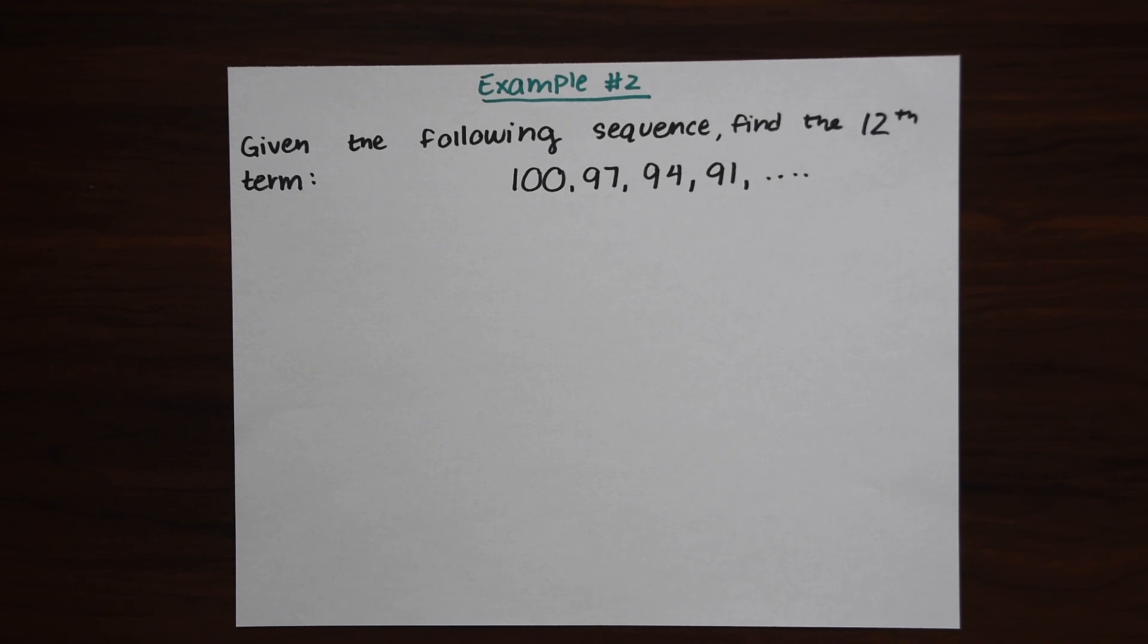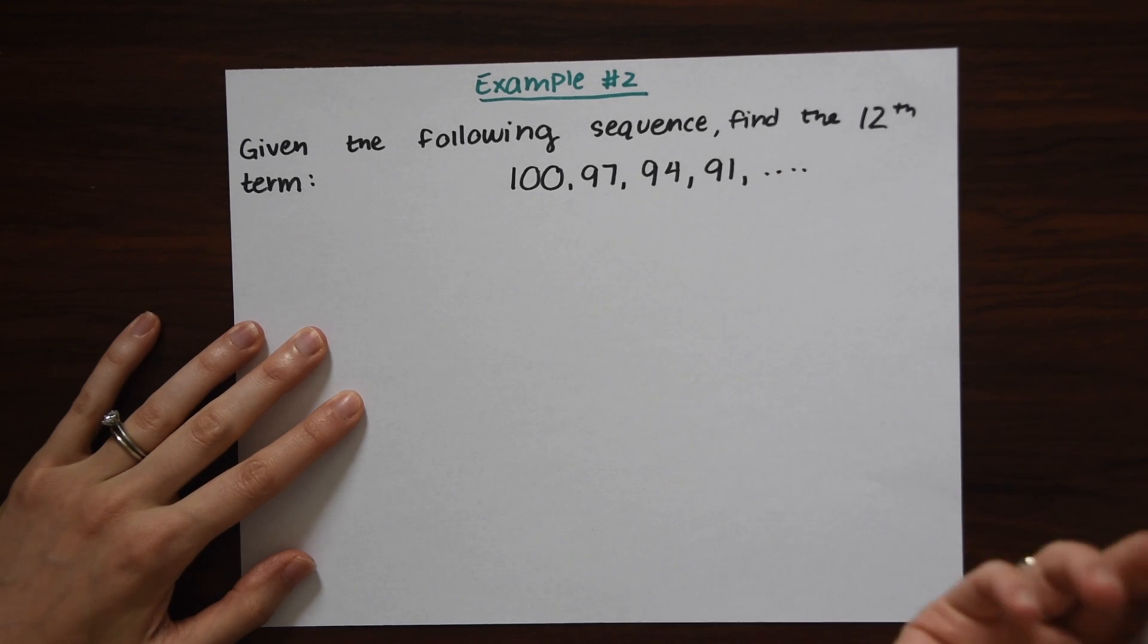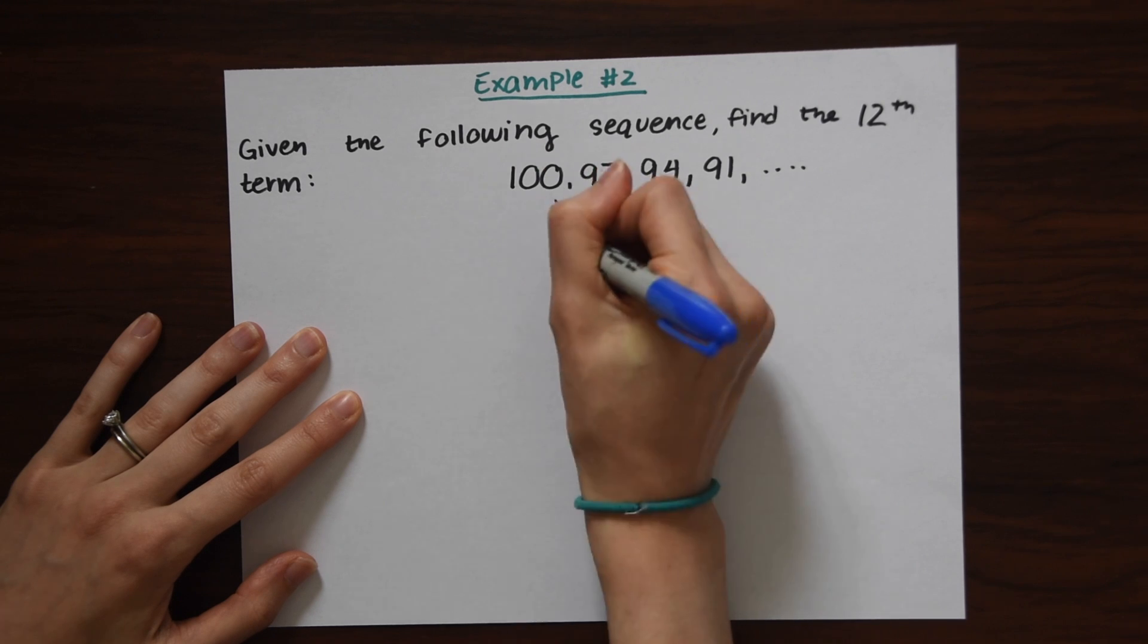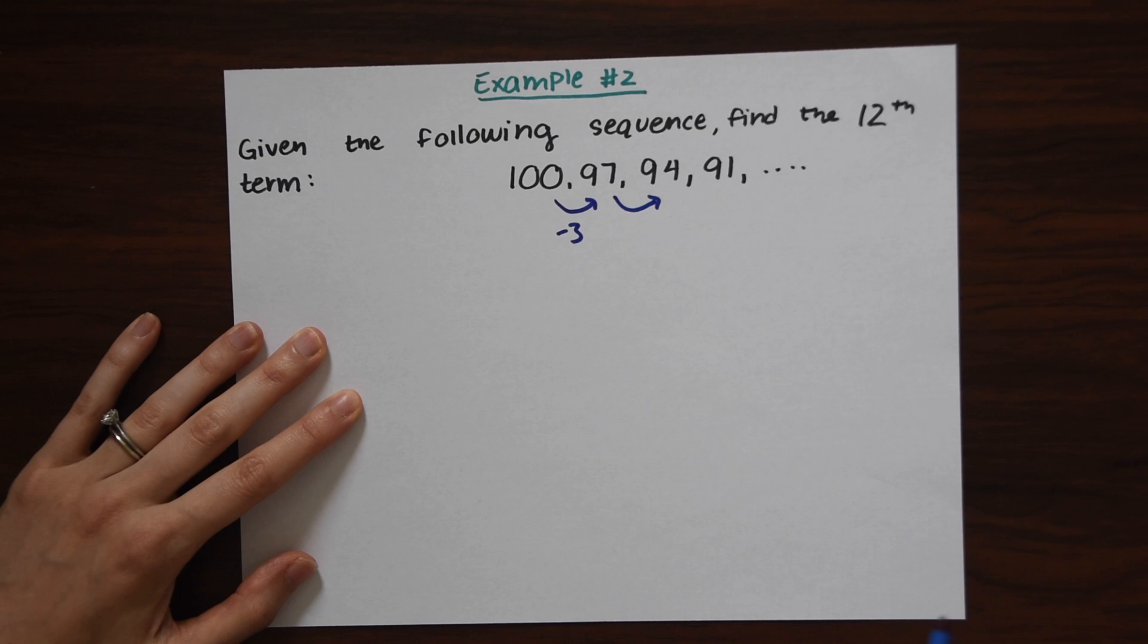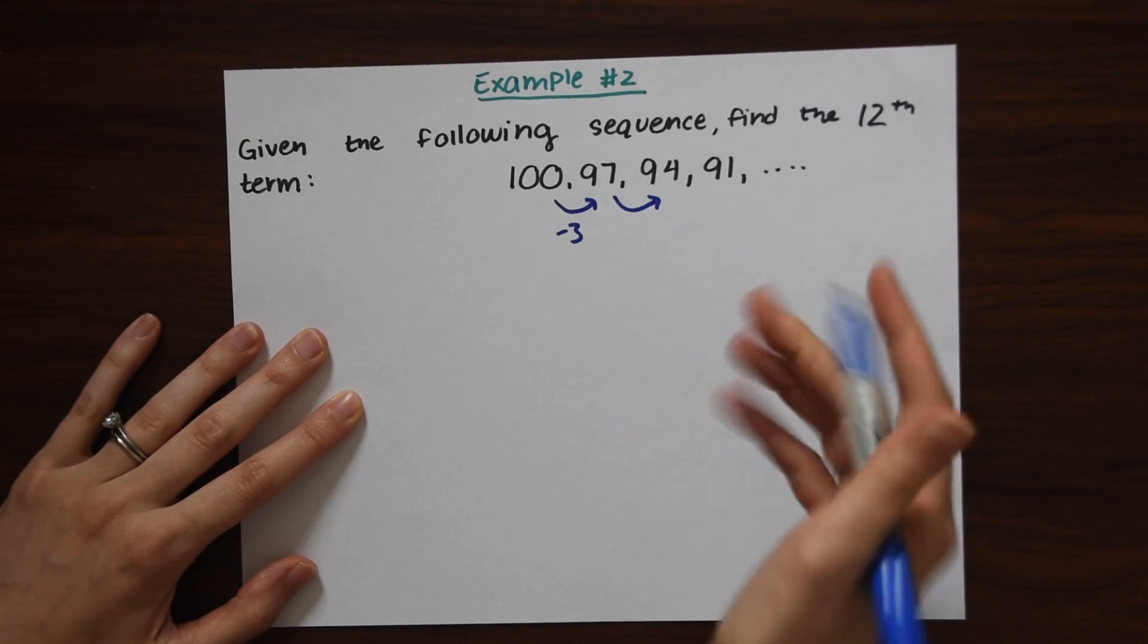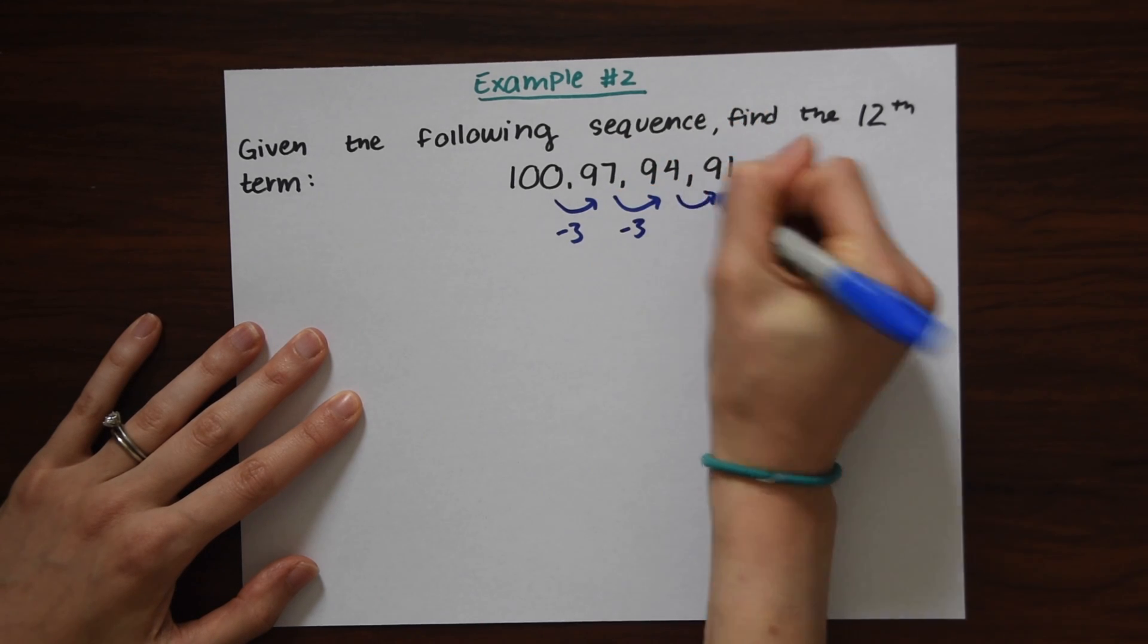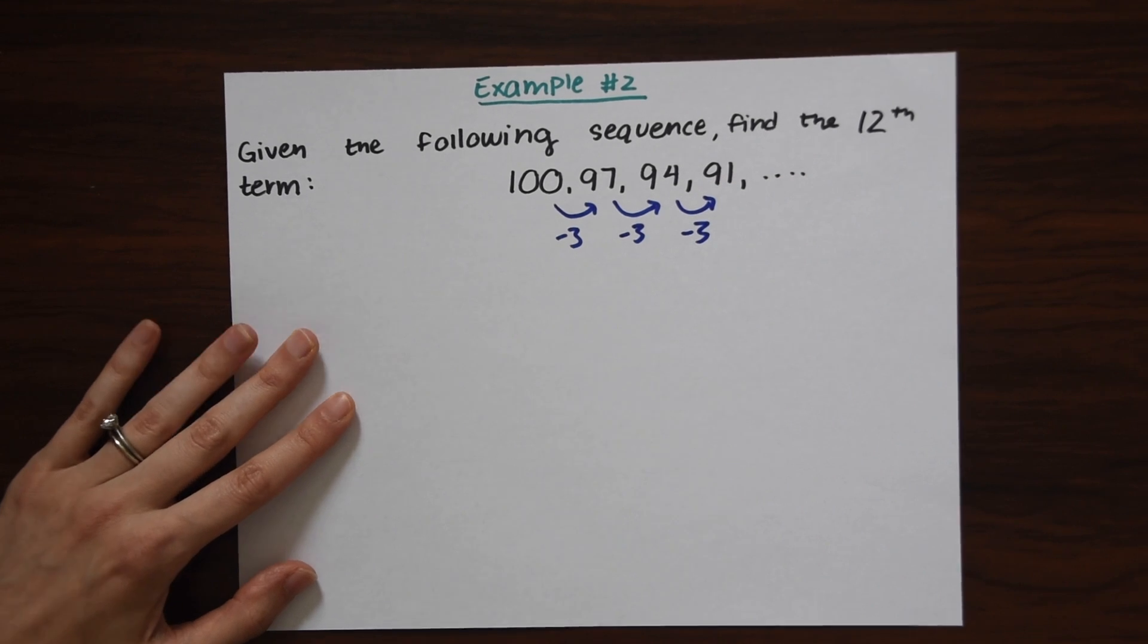So the first thing you're going to want to do is find out what the pattern is. So what is the pattern going on between these numbers? So if you look, we're actually subtracting this time. And we're subtracting by 3. 100 minus 3 gives us 97. So if you're never sure about the pattern, you could always just play around with numbers in your calculator and see the relationship between these numbers. 97 minus 94, again, minus 3. 94 minus 91, minus 3.